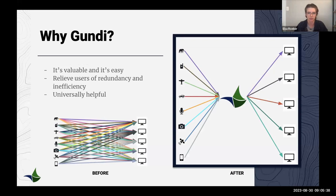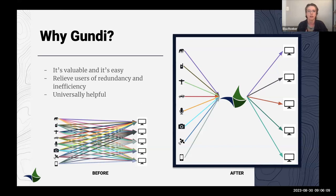Why is Goondi impactful? It's very easy to use and it eliminates a lot of inefficiencies and redundancies happening in the field. Before Goondi, everyone with a certain type of device had to figure out for themselves how to export that data into their destination system. At last year's EarthRanger conference, people were asking how to get fence sensor data or camera photos into their EarthRanger site — those are classic examples of what Goondi solves.